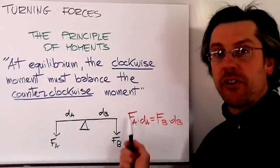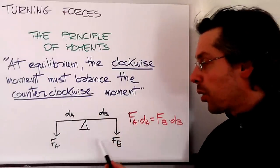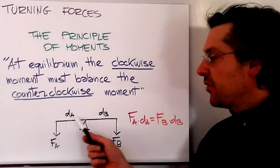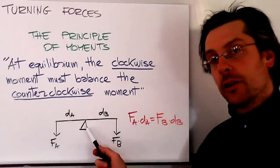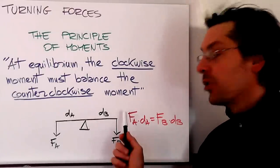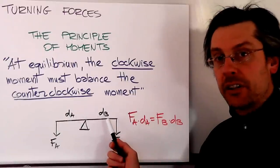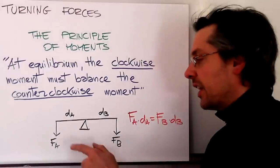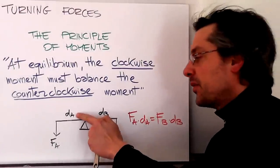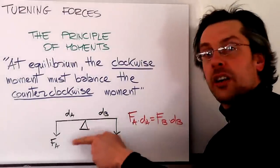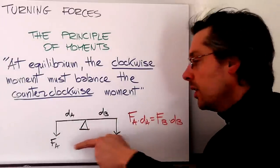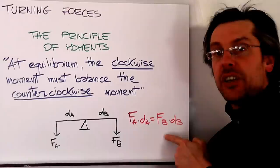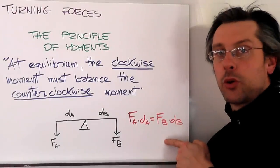And again, if we simplify the same problem this way, here we have a force A. This is the distance from the pivot. This is the other force and its distance from the pivot. In order to have equilibrium, we need that this times this, so the torque, the counterclockwise torque, must equal this times this, which is the clockwise moment or torque.